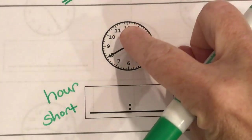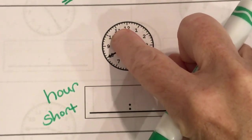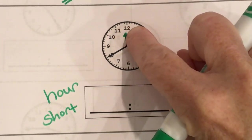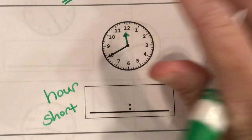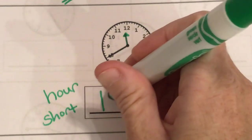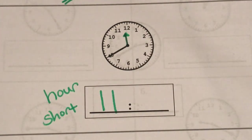Okay so again my hour hand passed the 11, it's more than 11 but it didn't get to the 12 yet. It didn't reach the 12 so our hour hand has to be 11.